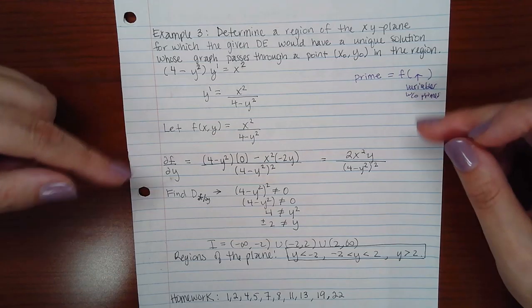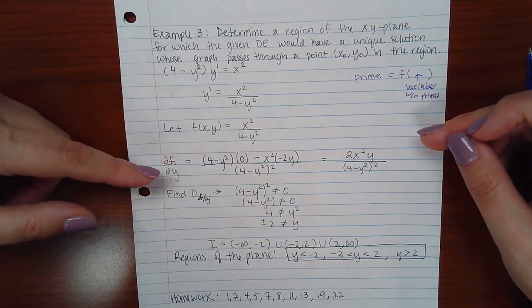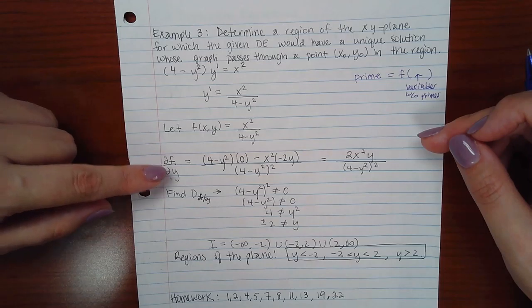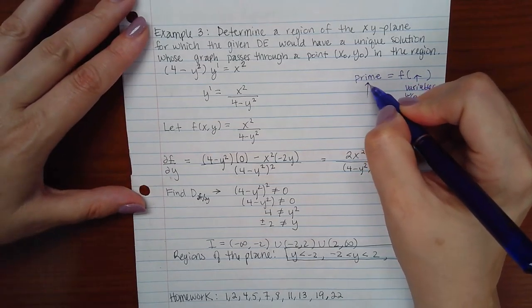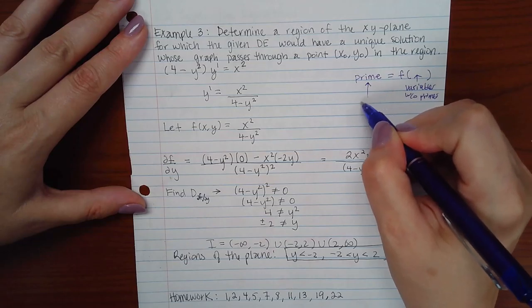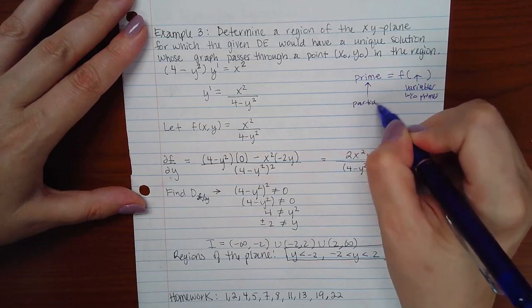So you can't exactly take a direct derivative, but you can take a partial derivative. And normally your partial derivative should be with respect to the variable that has the prime here. So whatever variable is here, that's what you're going to take the partial derivative of.